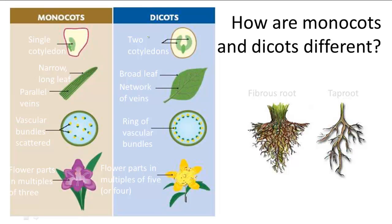Flowering plants are divided into monocots and dicots. The distinguishing feature that lends their names is that within the seed, monocots have one cotyledon and dicots have two cotyledons.